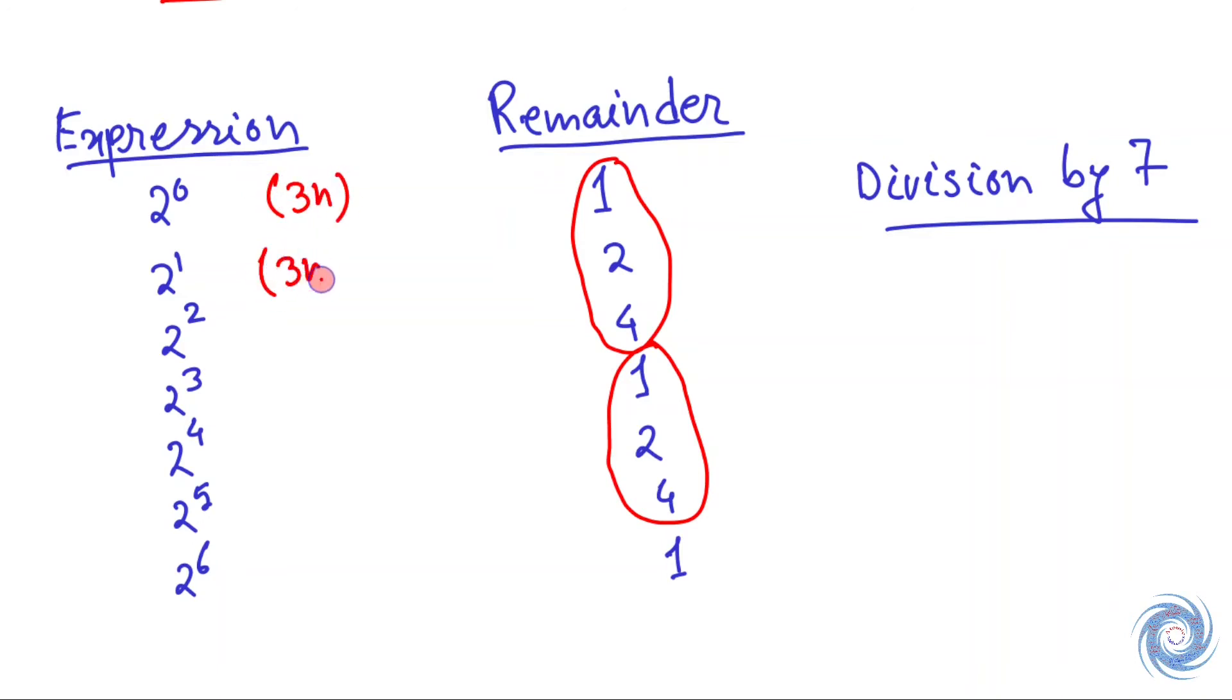When the exponent is of the form 3n+1, the remainder is 2. When it's of the form 3n+2, the remainder is 4. This pattern of 3n, 3n+1, and 3n+2 repeats consistently.